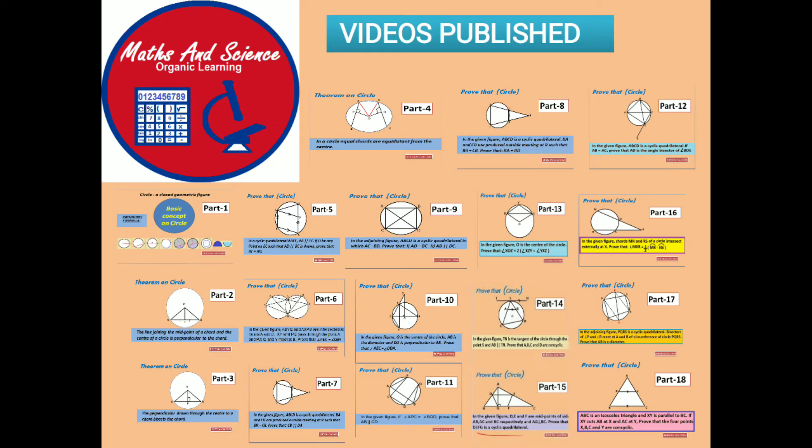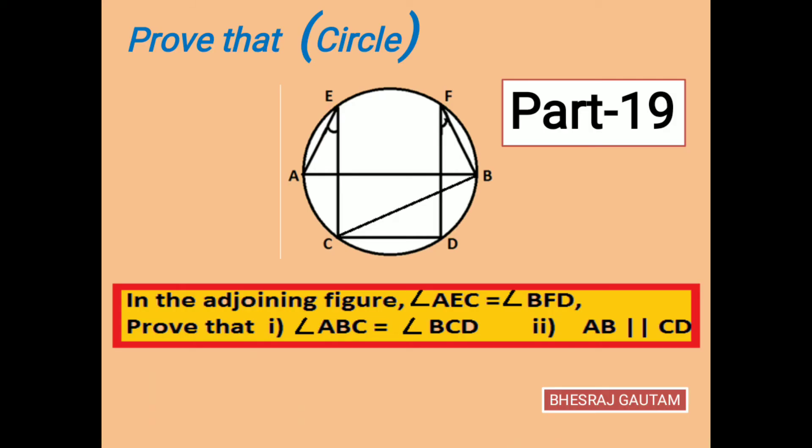In today's session, in the question I have taken two angles: angle AEC and angle BFD are given equal. Using the information given, we will prove angle ABC and angle BCD equal. Also, we will prove line segments AB and CD are parallel.